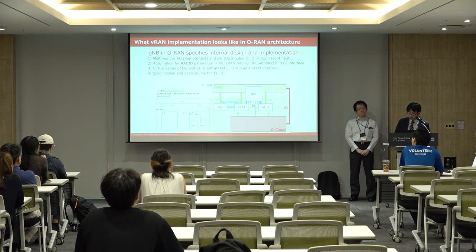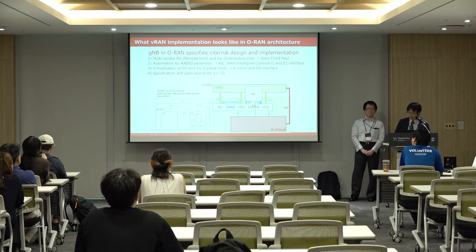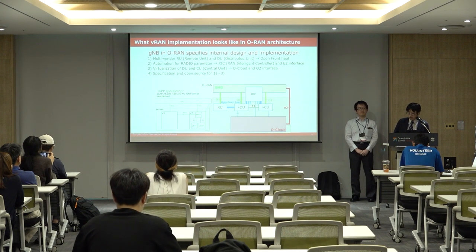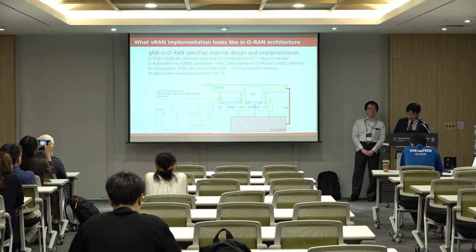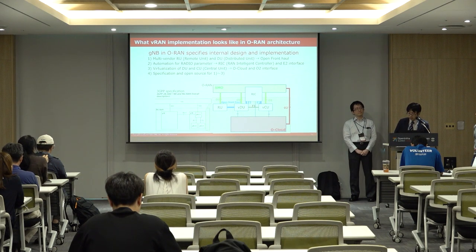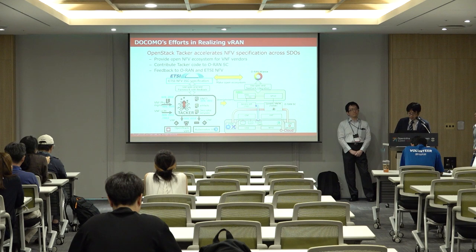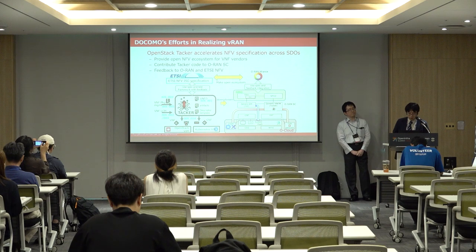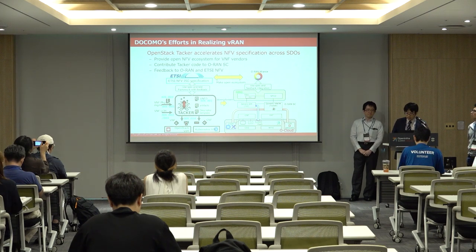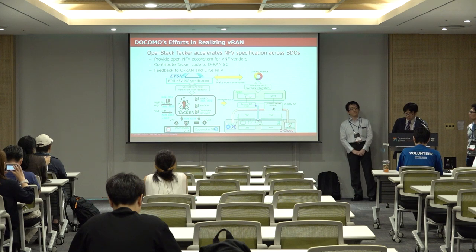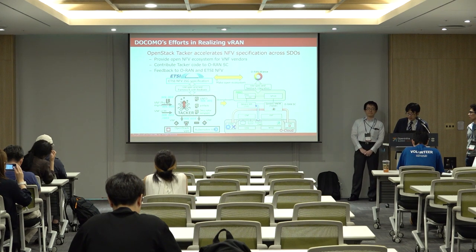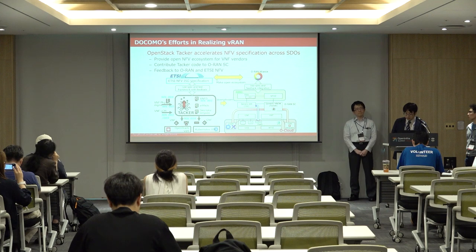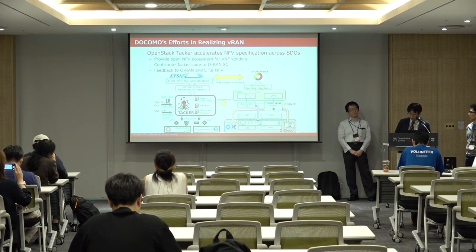OpenInfra and TACA are called O-Cloud in O-RAN. O-Cloud supports virtualization and lifecycle management of RAN equipment like vDU and vCU, and supports automation of operations with LCM, as shown in this slide. TACA accelerates NFV specifications across SDOs like ETSI and O-RAN. TACA is an ETSI-compliant VNFM, and TACA downstream to O-RAN is key to realizing vRAN. These activities are very interesting for operators, and TACA helps avoid fragmentation in the mobile industry.